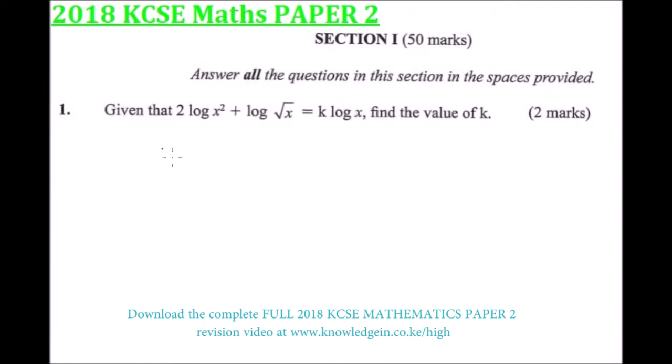In this question, we are going to apply the laws of logarithm. We can rewrite our equation as 2 times the logarithm of x squared plus the logarithm of the root of x equals k logarithm of x.